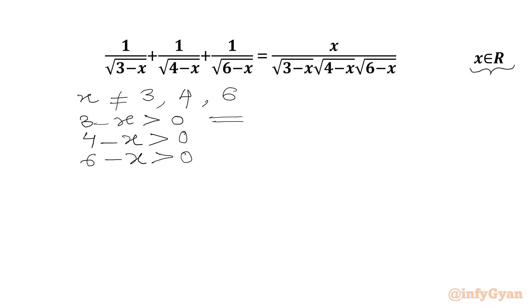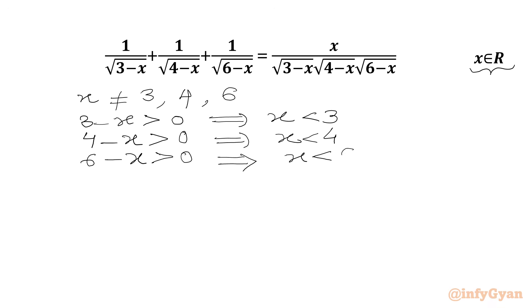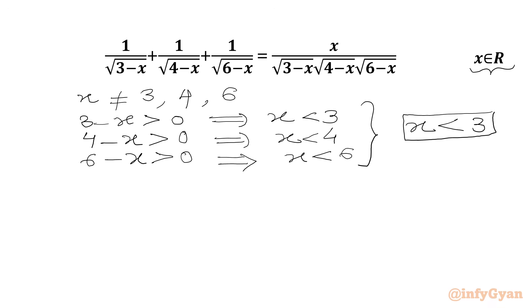From the first inequality we get x should be less than 3. From the second inequality we get x should be less than 4. And from the third inequality x should be less than 6. Taking the intersection of these three inequalities, our answer must be x less than 3. So we are going to accept only values of x where x is less than 3.